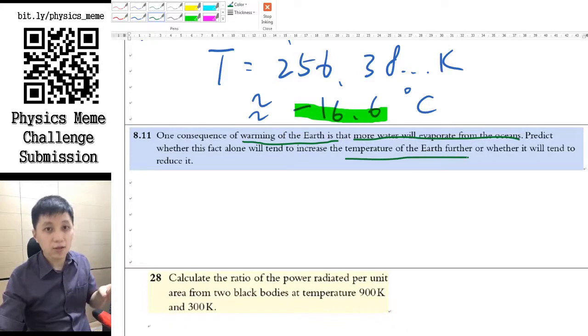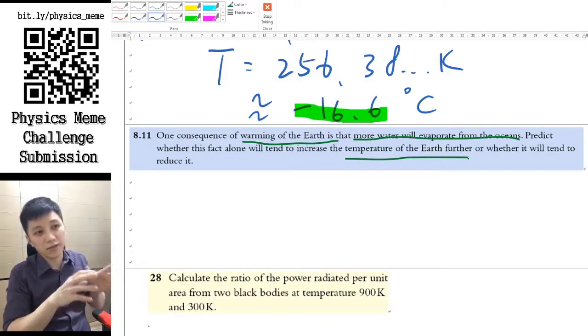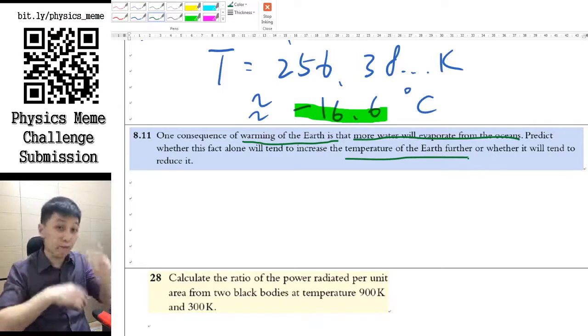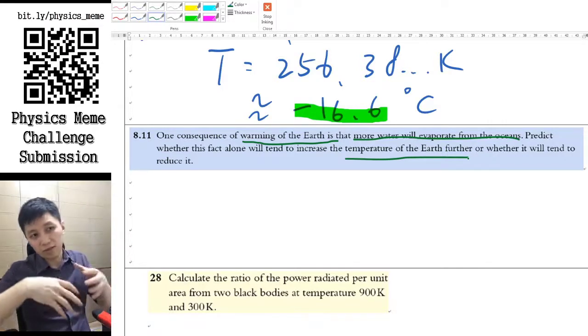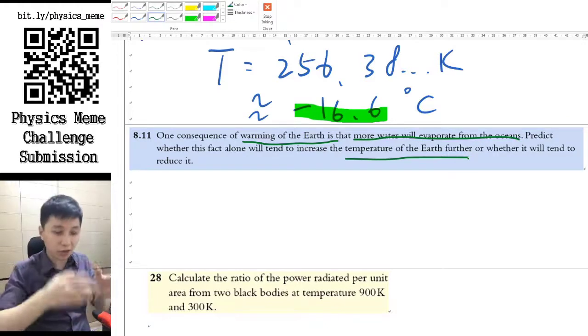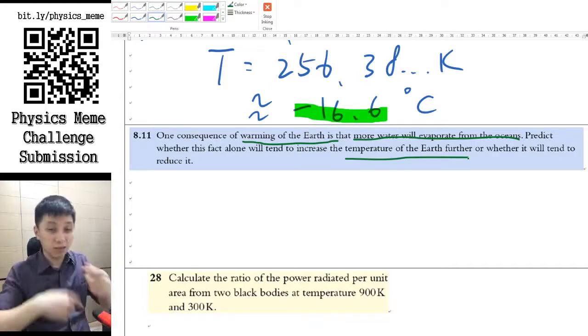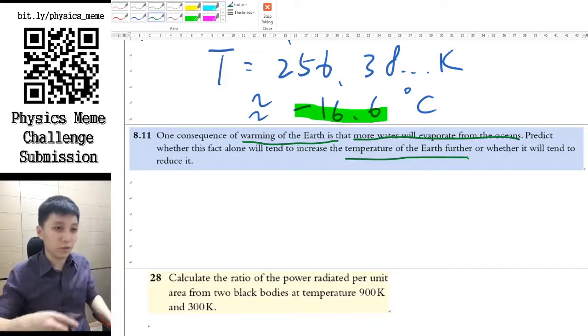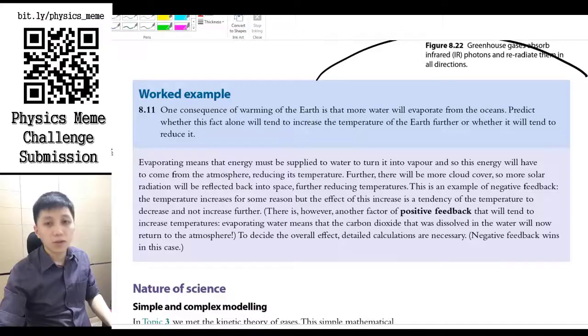Because if this does increase the temperature of the Earth further, that means this will become vicious cycle. Since this would make the Earth with greater temperature, and greater temperature once again gets more water away from the ocean, and this will continue. So this becomes vicious cycle. So whether or not this is true, pause the video, think about it, and we'll talk about it later.